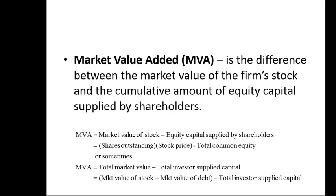Another common measure used to determine how well management is doing is market value added, MVA. It's the difference between the market value of the firm's stock and the cumulative amount of equity capital supplied by shareholders. Shareholders have supplied a certain amount of equity capital which we can find on the balance sheet, and hopefully the firm's stock is worth quite a bit more than that. So MVA is the market value of the stock minus the total common equity found on the balance sheet.